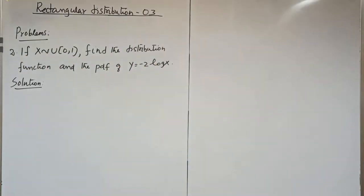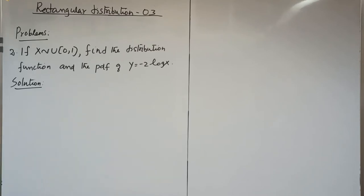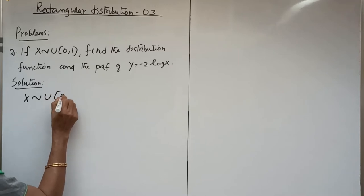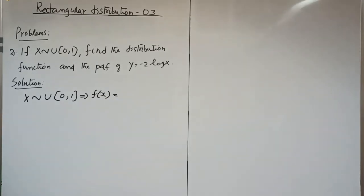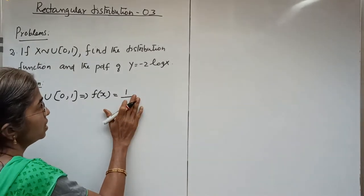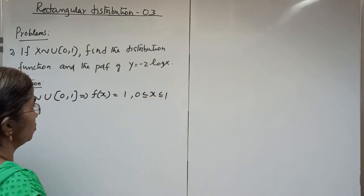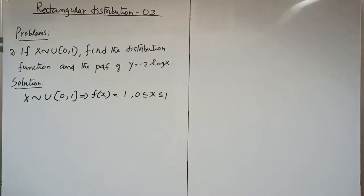Next question: if X follows Uniform(0,1), find the distribution function and the PDF of Y = -2 log X. Since X follows Uniform(0,1), f(x) = 1 by the length of the interval, that is 1/1 = 1, for 0 ≤ x ≤ 1.